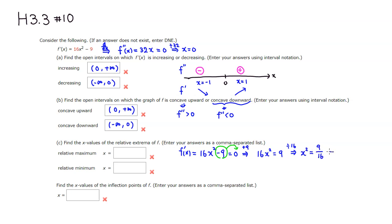Dividing through by 16 gives x squared equals 9 over 16. Taking the square root of both sides: x equals plus or minus the square root of 9 over 16. The square root of 9 is 3 and the square root of 16 is 4, so the critical numbers are positive 3/4 and negative 3/4.